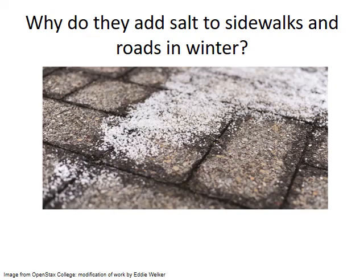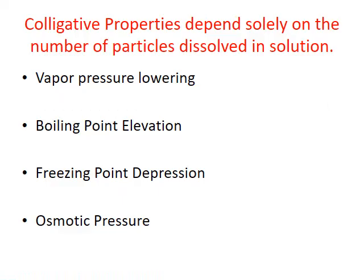Have you ever wondered why they add salt to icy sidewalks and roads in winter? It helps melt the ice by lowering the freezing point of water. This is a classic example of a colligative property of a solution. Colligative properties are properties of solutions that depend solely on the number of solute particles that are dissolved, and not on the identity of that particle. This means that we see changes in colligative properties like boiling point or freezing point for the solution that are directly proportional to the concentration of the solution.